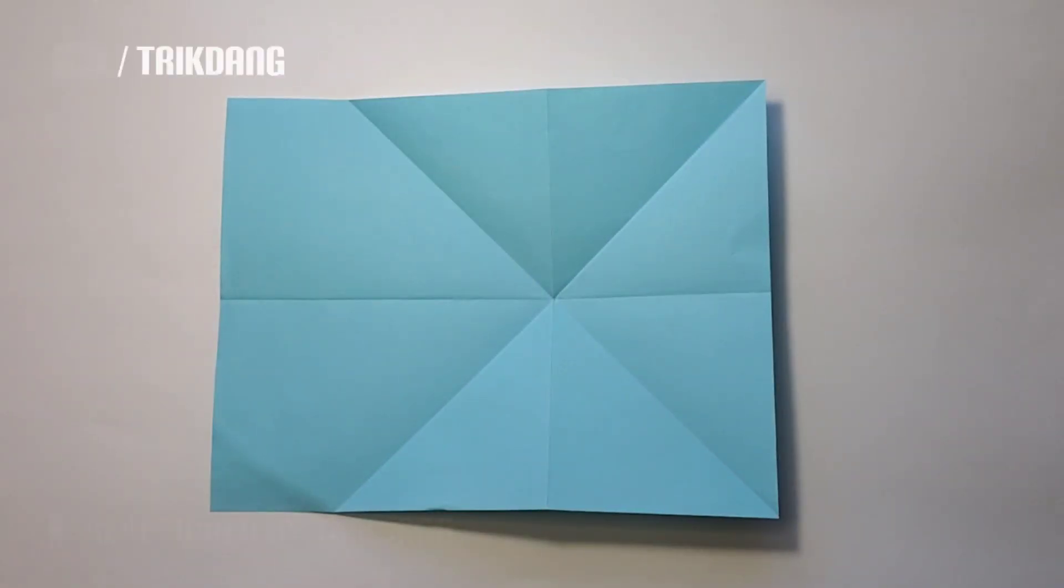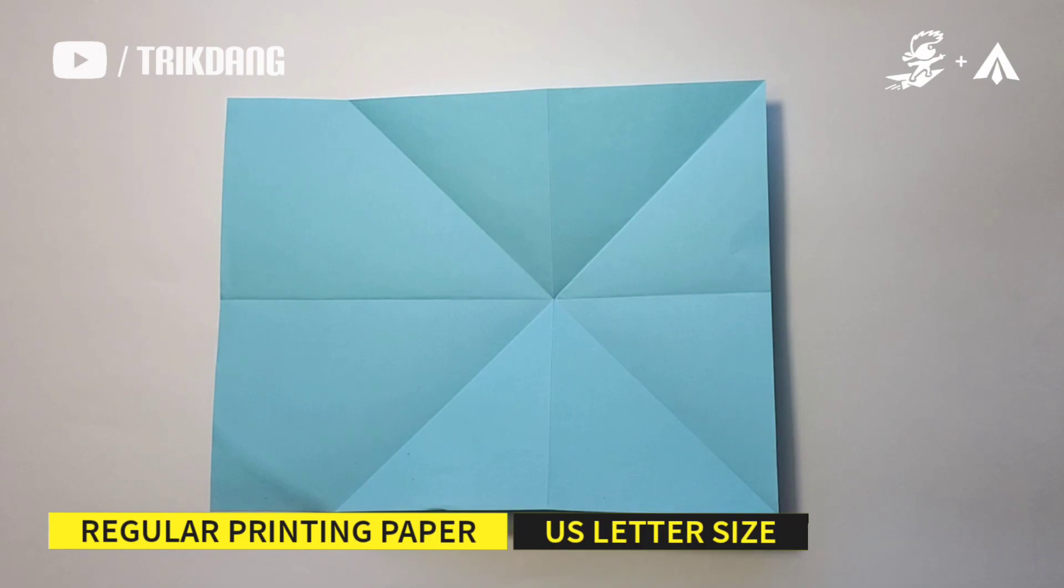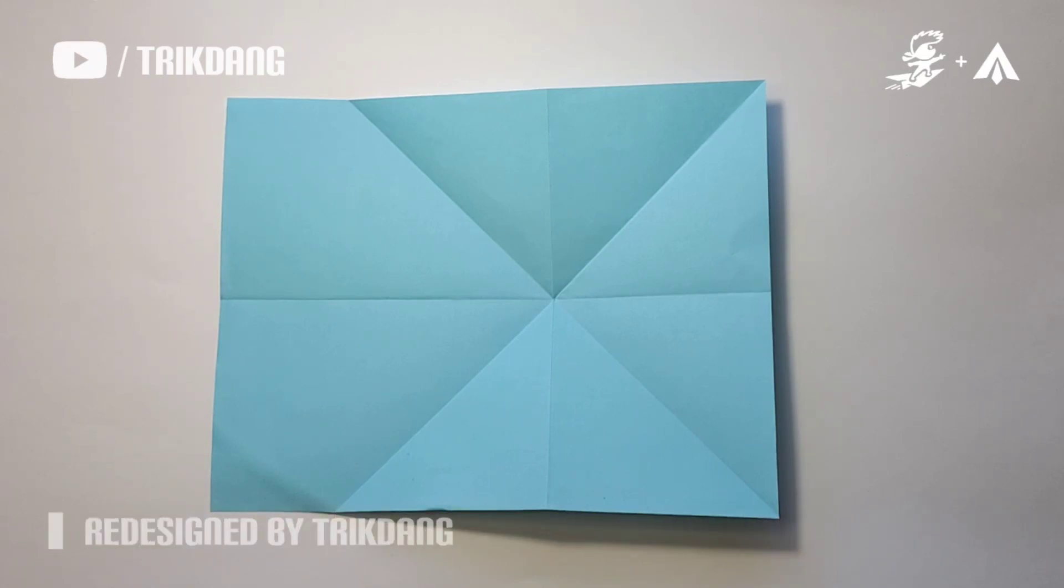Hello everybody, welcome to Tridang channel. Today I'm going to teach you how to make the Swallow X. The name of the plane tells you everything. It is a design based on the Swallow, an awesome classic paper airplane. To make the paper airplane you will need a piece of US letter size paper. If you don't have US letter size paper, you can use A4 paper, regular printed paper, not book paper, whatever papers. It must be a rectangle size of paper.